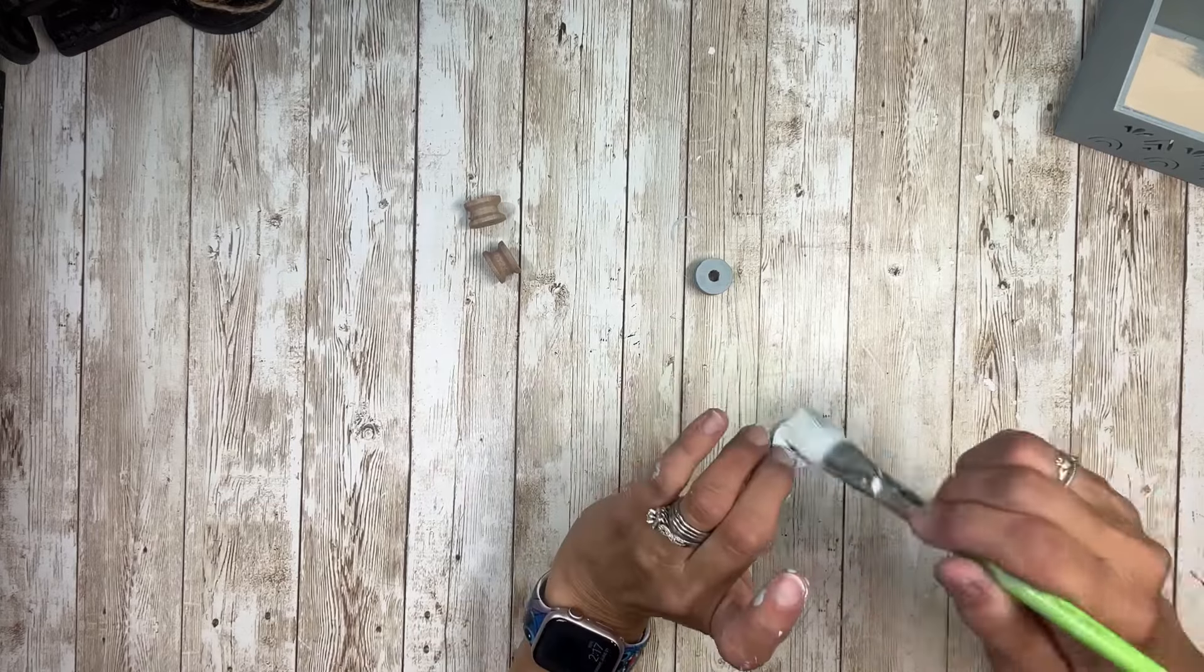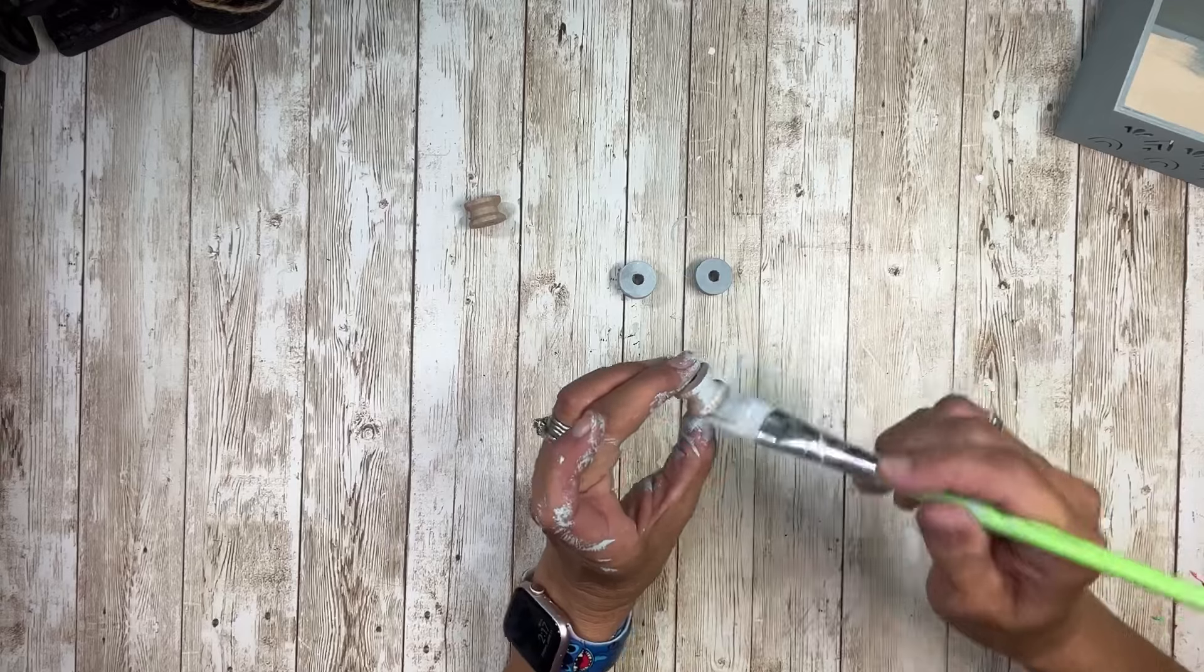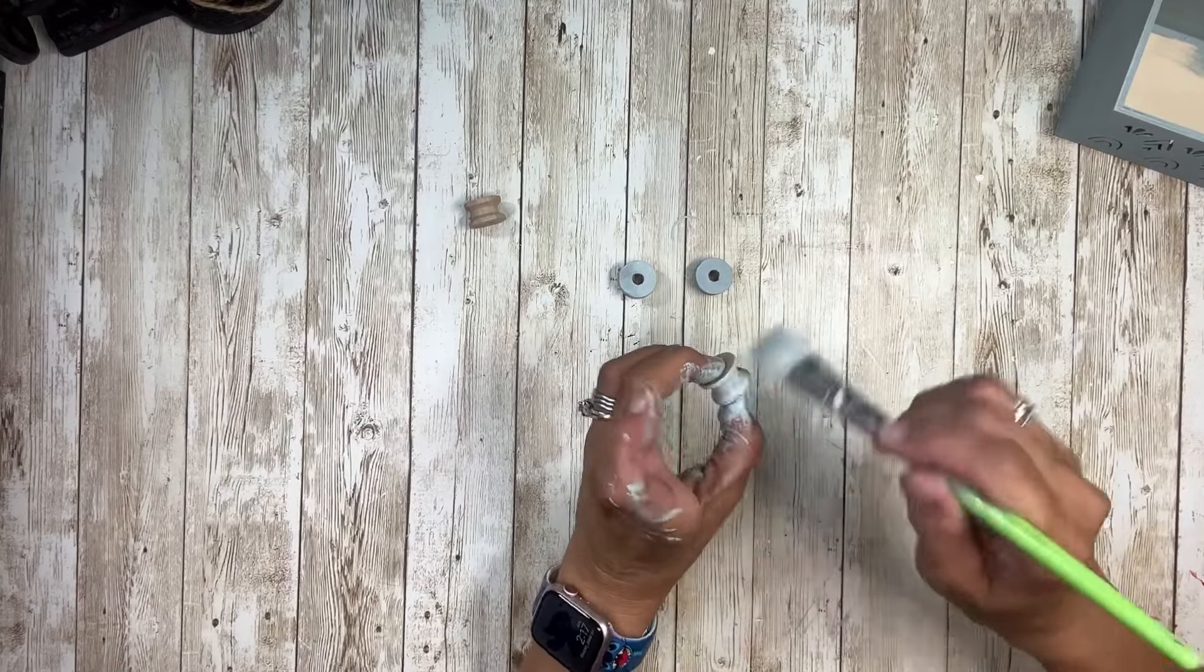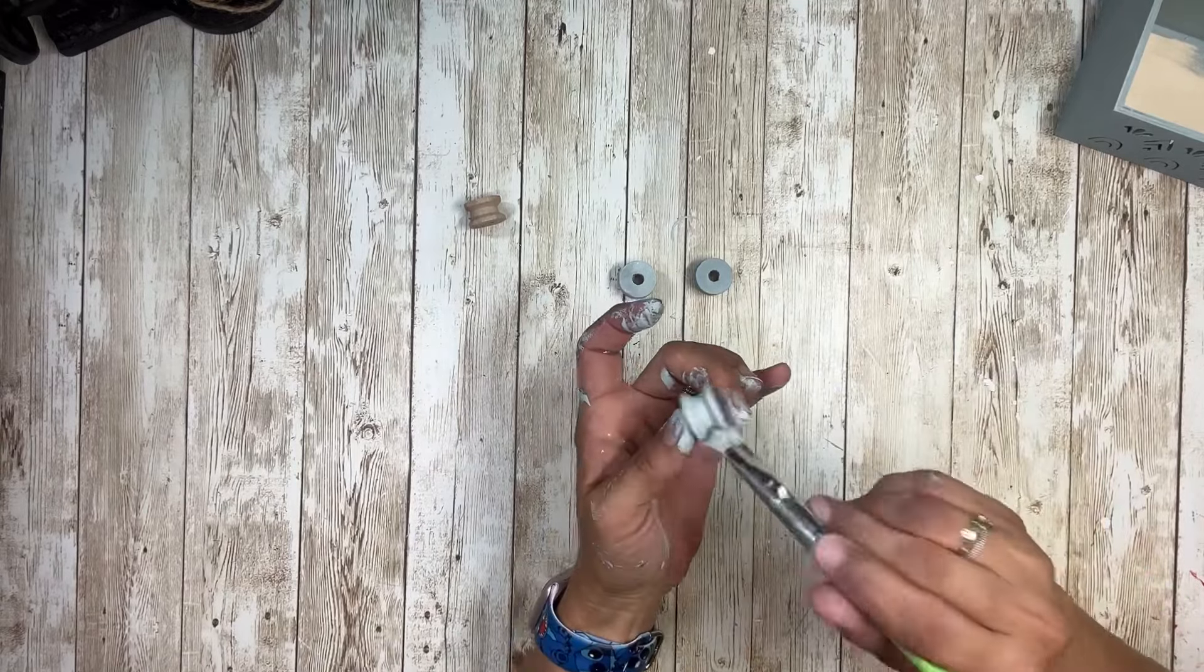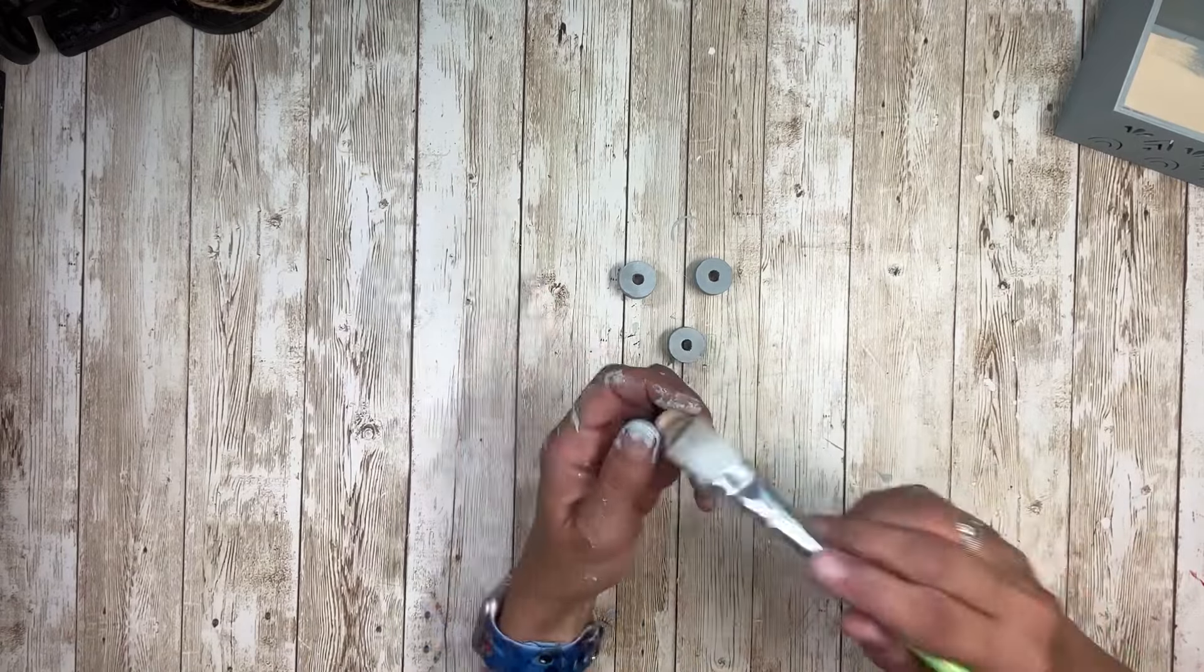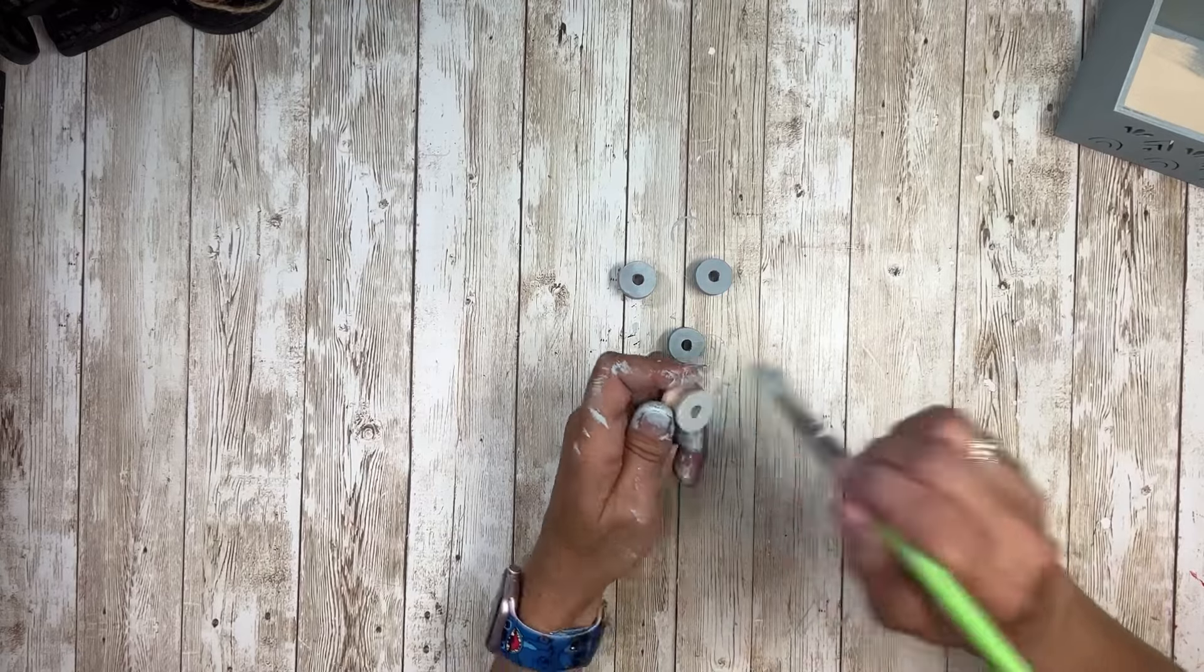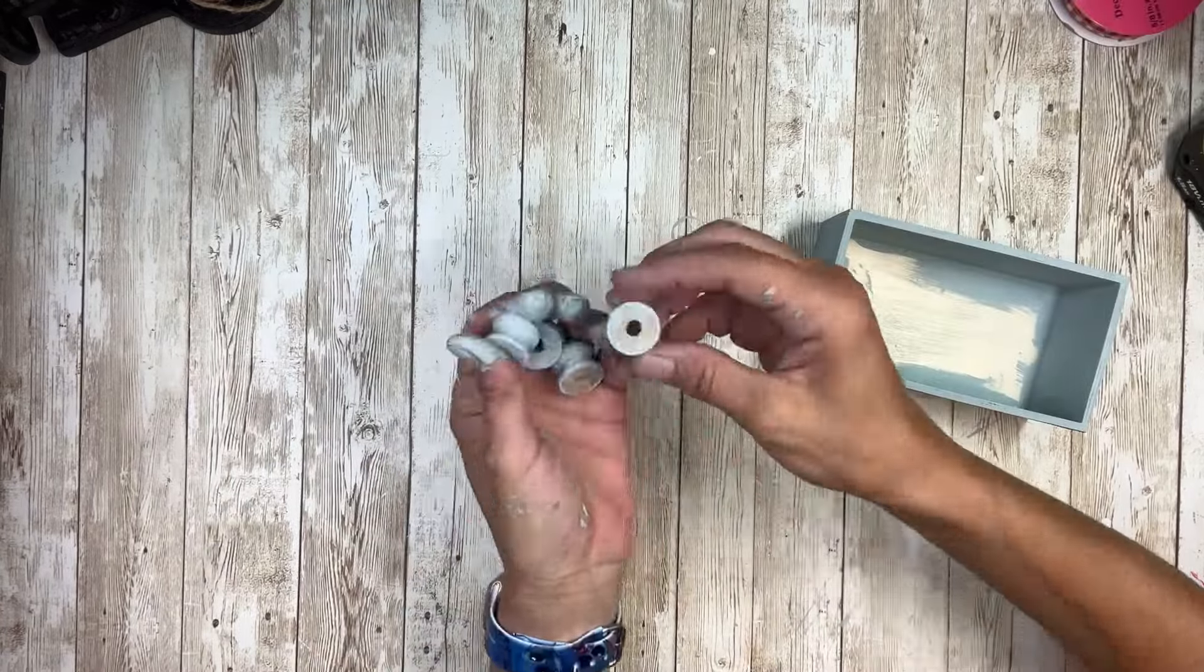These are like half thread spools. They're like really tiny ones. I just had them in my stash. I don't even remember where they came from except for maybe I got them at a thrift store in a bag of wooden pieces that I had bought. But you could use little wooden balls or other little spools of thread. It's totally up to you.